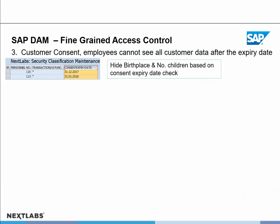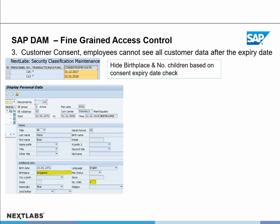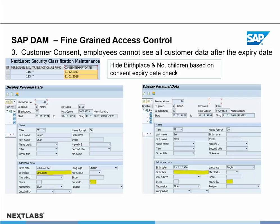In the third example for fine-grained access control, this is for customer consent. Employees can see all the customer data depending on when the expiration date for the consent is up. We have two different transactions — 116 and 113 — with different consent expiration dates. Based on those dates, employees either have the ability to see or hide the birthplace and number of children. In the first scenario, the user's information is displayed, showing the birthplace and number of children. In the second scenario, those things are hidden because it's within the timeframe that it's not allowed to be seen.